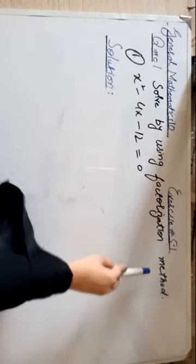Now we have to start Exercise 5.1, page number 114. Question number 1: solve by using the factorization method. The equation is x² - 4x - 12 = 0.